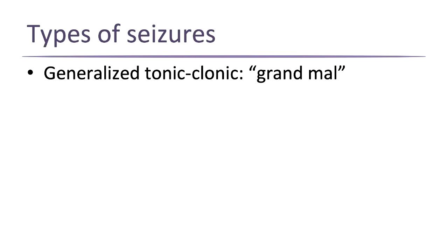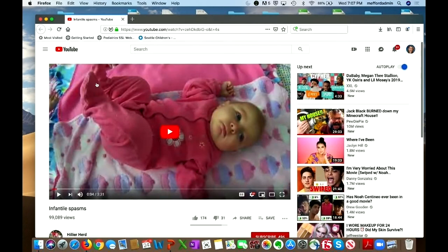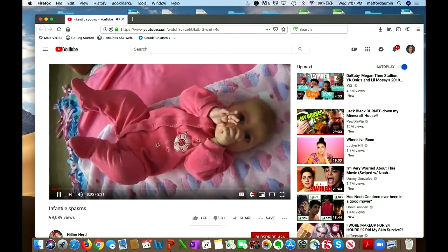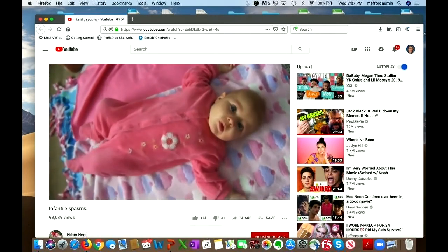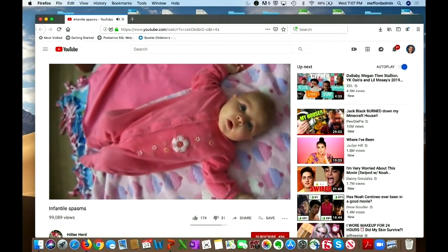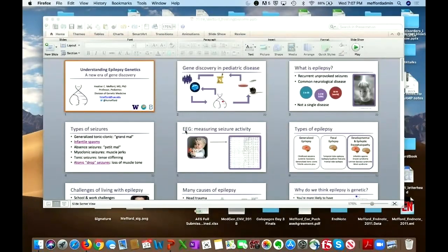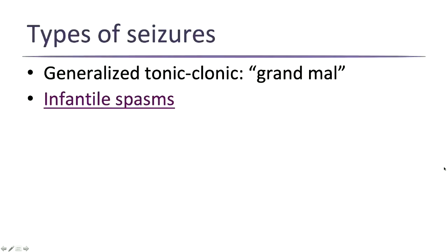But there are actually many different types of seizures. One type we see a lot in pediatrics is called infantile spasms — a little jerk that happens repeatedly in infancy and early childhood. They may resolve over time or may develop into additional seizure types in those children.